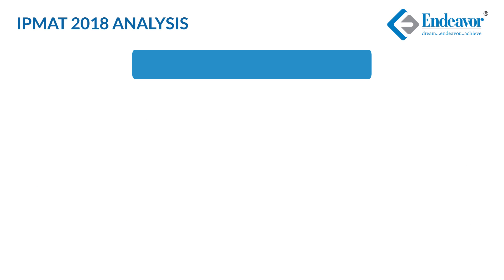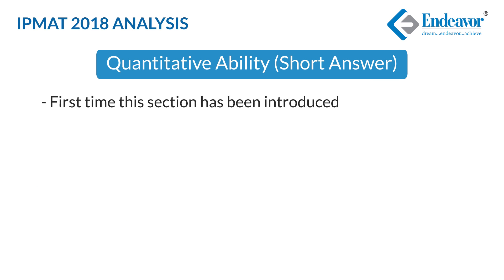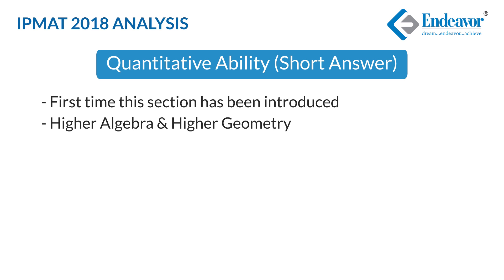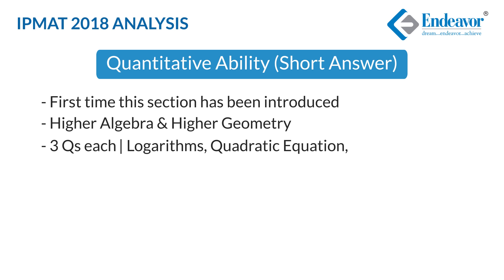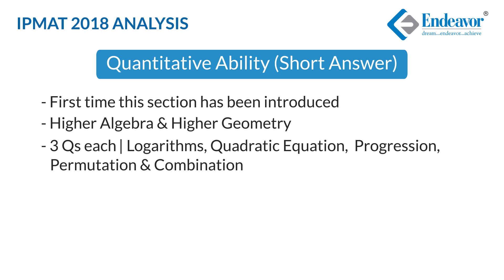Now let's discuss the Quantitative Ability short answer based questions. This is the first time such a section was introduced, though in IPMAT 2017 there were a couple of questions where students had to key in the correct answer. This year there were 20 questions to be answered in 40 minutes. Again, most questions were dominated by higher algebra and higher geometry, with approximately three questions from each of: logarithms, quadratic equations, progressions, and permutation and combination. Most were calculative and lengthy.